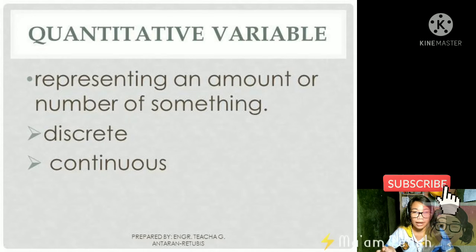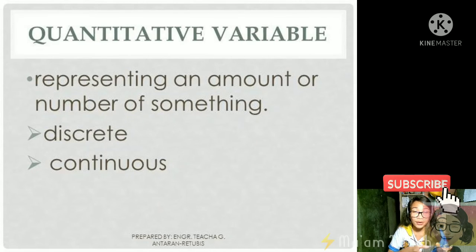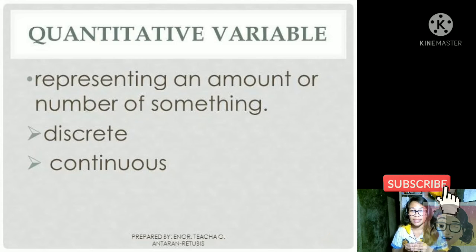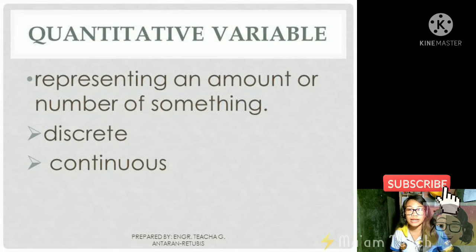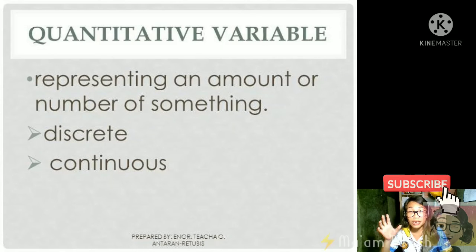What's the difference between the two? Discrete are those variables that can be counted—like for example, can you count your age? These are values that assume fixed or countable values that can be measured, like number of people, number of students, number of animals—something like that. Fixed sya or ma-count mo sya.